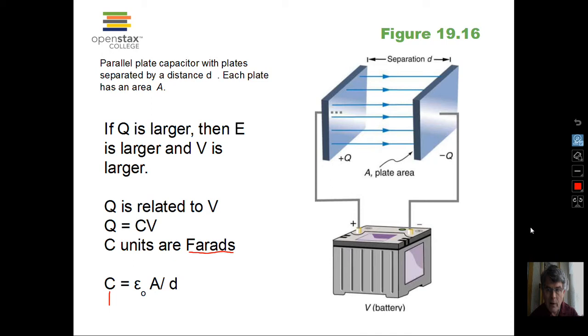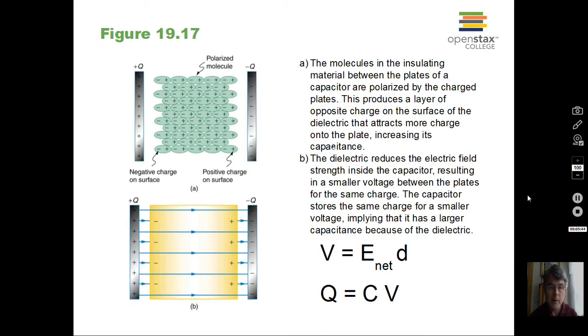So we have the capacitor, parallel plates. Capacitance value is a constant of proportionality between charge and potential difference on the plates. So we're going to go a little bit further here and discuss our calculations involved with the capacitor.